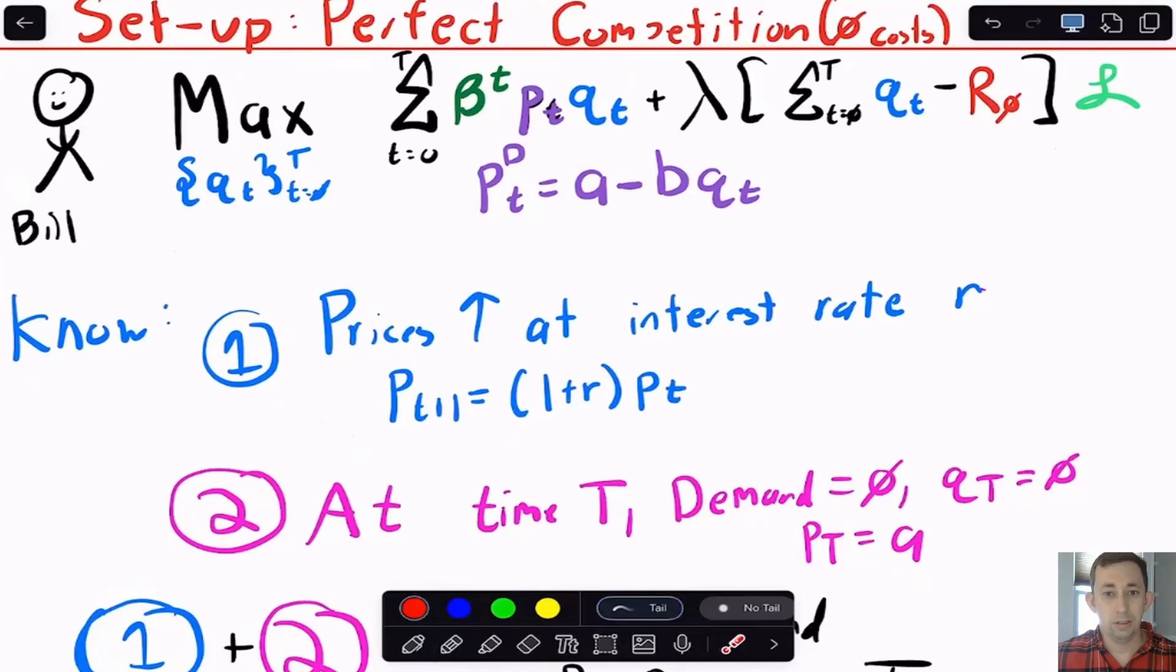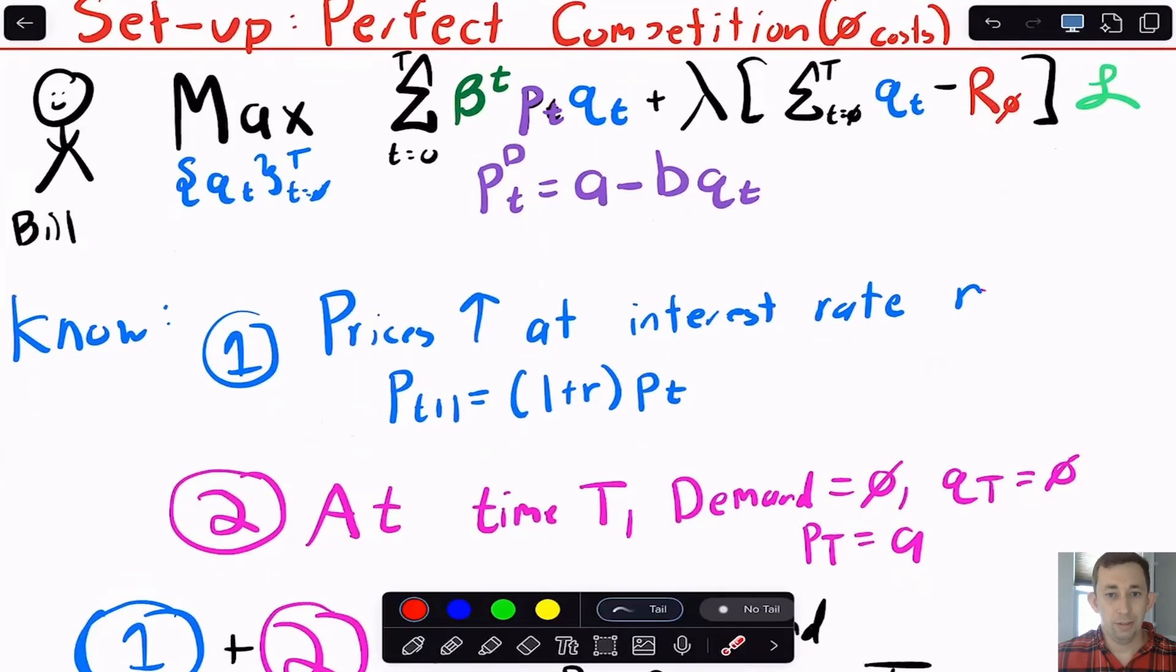Now, if you're in a course which is a little more math intensive, you might be asked to find the trajectory of prices, the trajectory of quantities or the amount that you pull out of the ground, as well as find an equation for the last year in which this resource exists. And so to do that, we're going to set up a maximization problem. We're going to have Bill, he's going to maximize this perfect competition profit maximization problem, where he's maximizing revenue, because we're going to say cost is zero. And we have this demand function where price is equal to A minus B times QT.